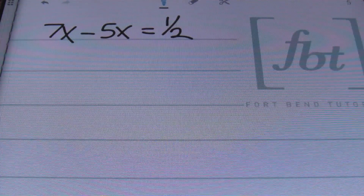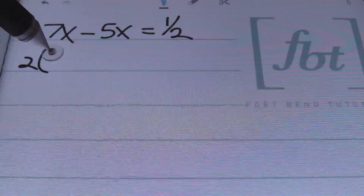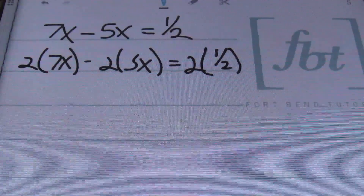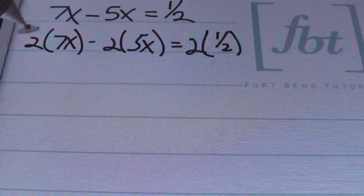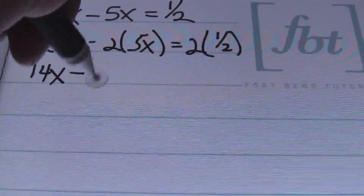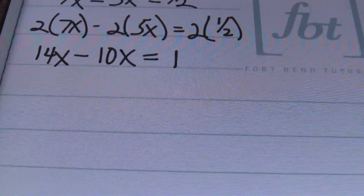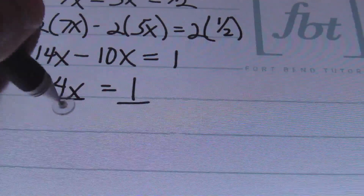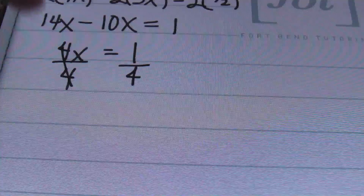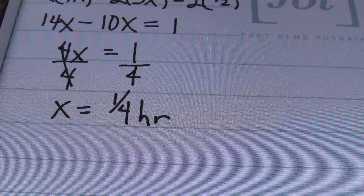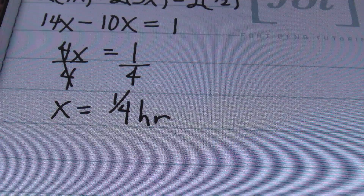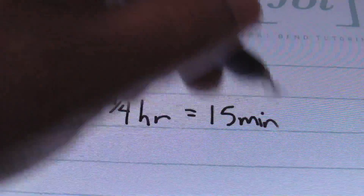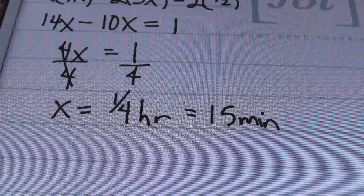Solving this problem, I'm going to get rid of the fraction first by multiplying everything by 2. So 2 times 7X minus 2 times 5X equals 2 times one half. That gives us 14X minus 10X equals 1. Subtracting, 14X minus 10X gives me 4X equals 1. Dividing both sides by 4, I end up with one-fourth hour. That's a quarter of an hour, or 15 minutes — that's how long it will take Kim and Jeremy to be one half mile apart.